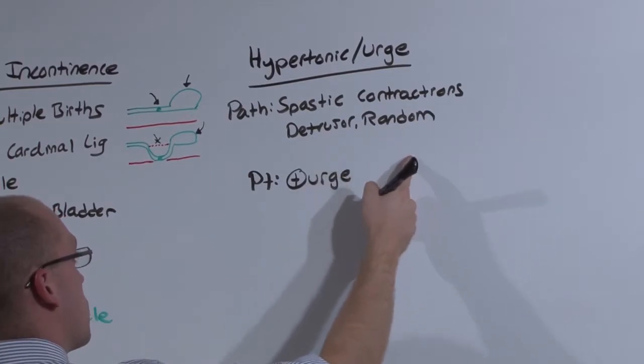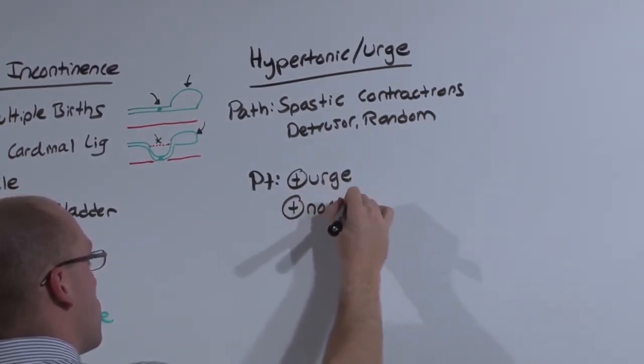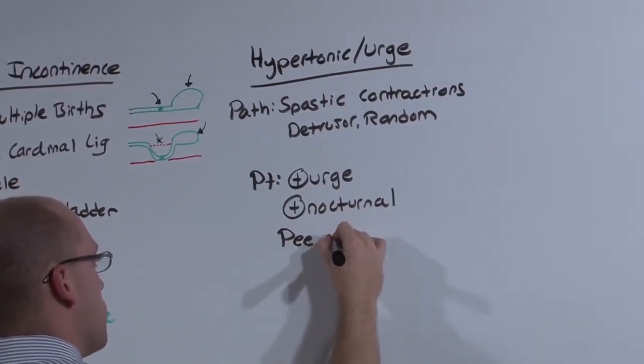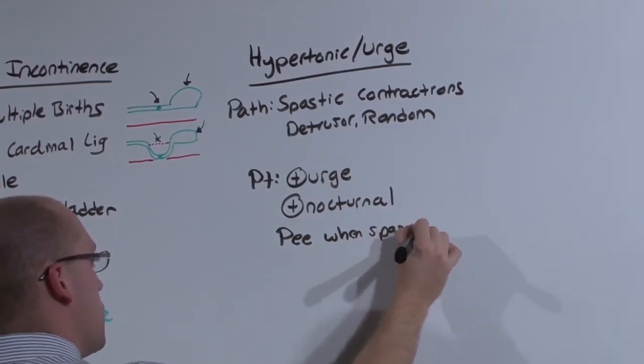And because these contractions can occur randomly and at any time, there will be nocturnal symptoms. And they pee whenever it spasms, which can be random and uncontrolled.